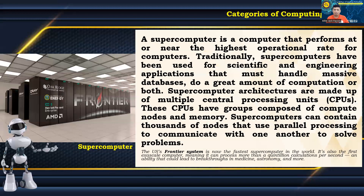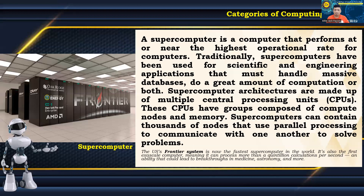A supercomputer is a computer that performs at or near the highest operational rate for computers. Traditionally, supercomputers have been used for scientific and engineering applications that must handle massive databases and do a great amount of computation. Supercomputer architectures are made up of multiple CPUs with groups composed of compute nodes and memory. Supercomputers can contain thousands of nodes that use parallel processing to solve problems. The United States' Frontier system is the fastest supercomputer in the world and the first exascale computer, capable of processing more than a quintillion calculations per second.